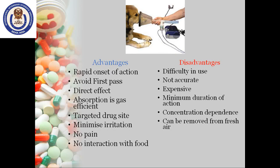Advantages of inhalation route: rapid onset of action; avoids first-pass metabolism; produces direct effect; absorption is gas-efficient; targeted drug delivery minimizes irritation; no pain; and no interaction with food. Disadvantages: it is very difficult to use and generally requires special techniques or devices; it is not accurate, making it difficult to regulate the exact dosage; it is expensive; it has a minimum duration of action; the pharmacological effect is concentration-dependent; and the drug can be removed by fresh air.